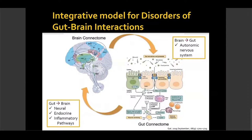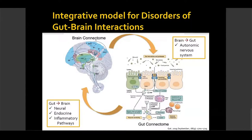This is the proposed model from the motility society showing multiple interacting brain networks that mediate the perception and modulation of visceral pain. This model is replacing the previous conventional focus on individual brain regions controlling pain separately from the enteric nervous system. This integrative model proposes reciprocal interactions between the brain networks, which they describe as the brain connectome.